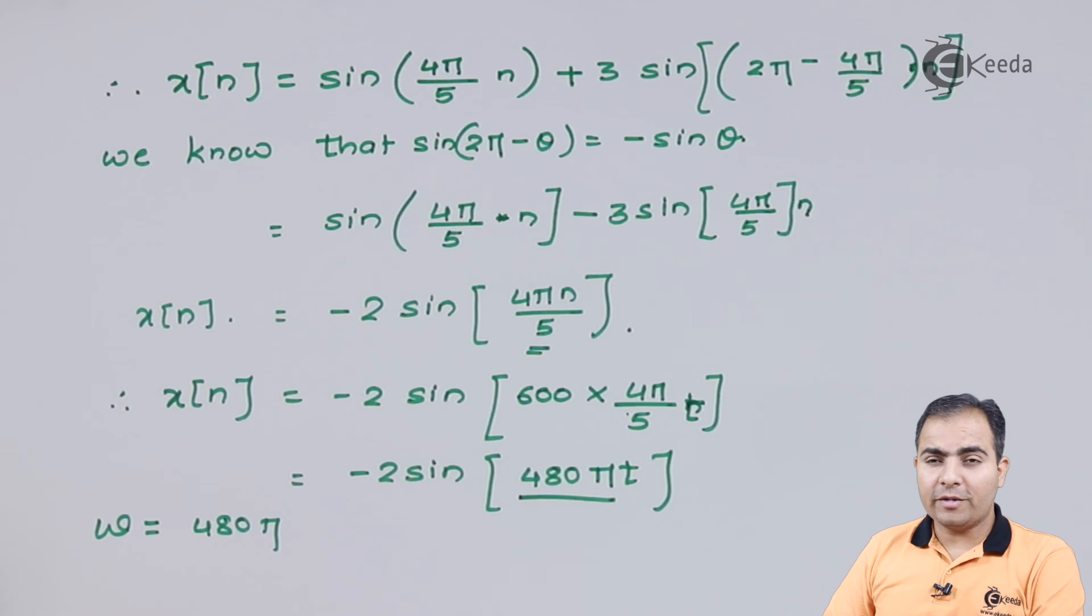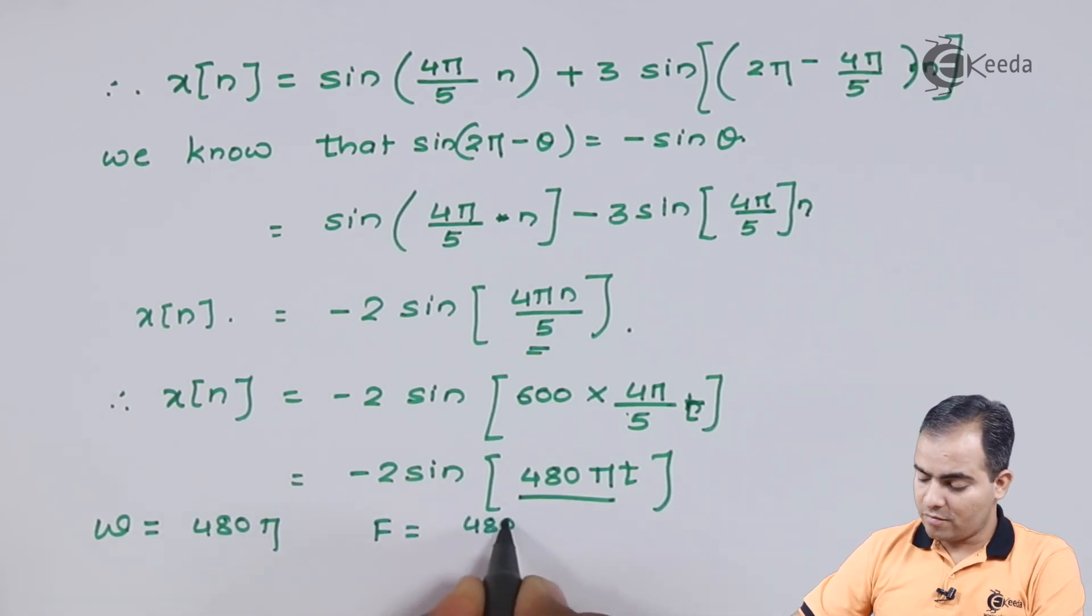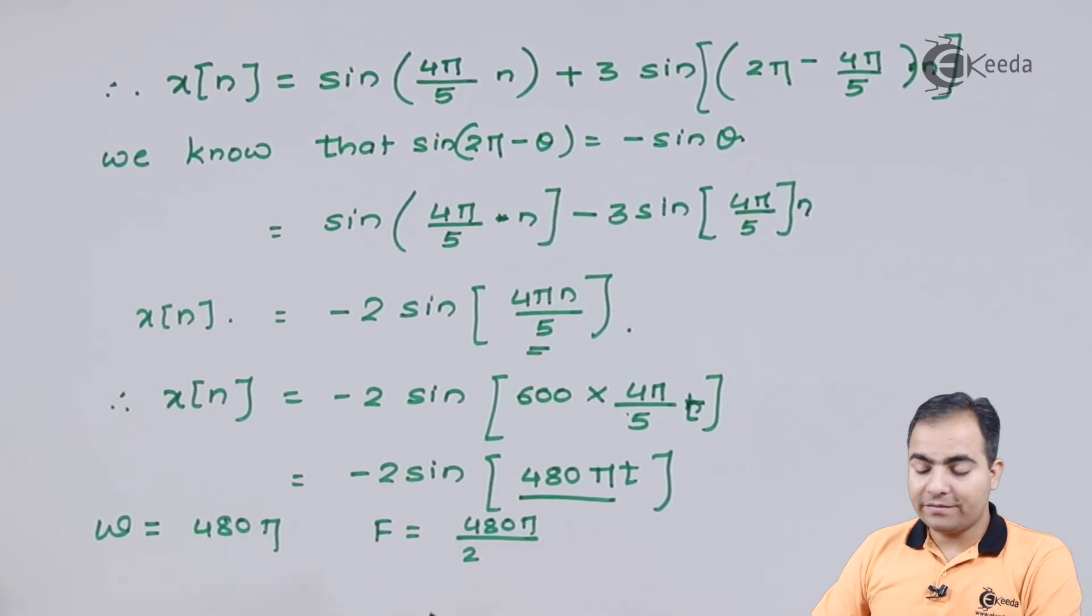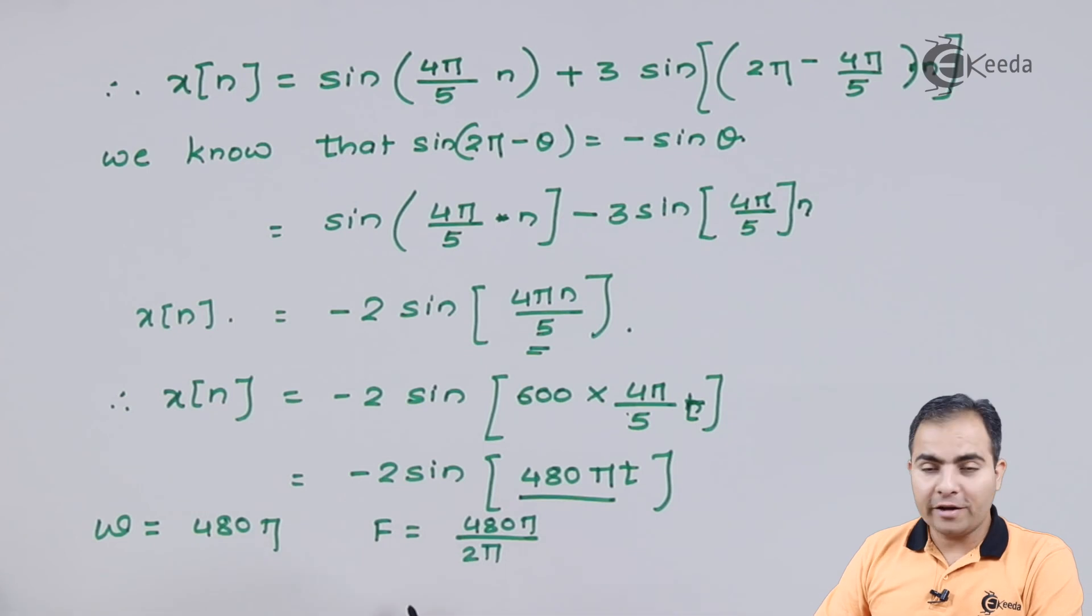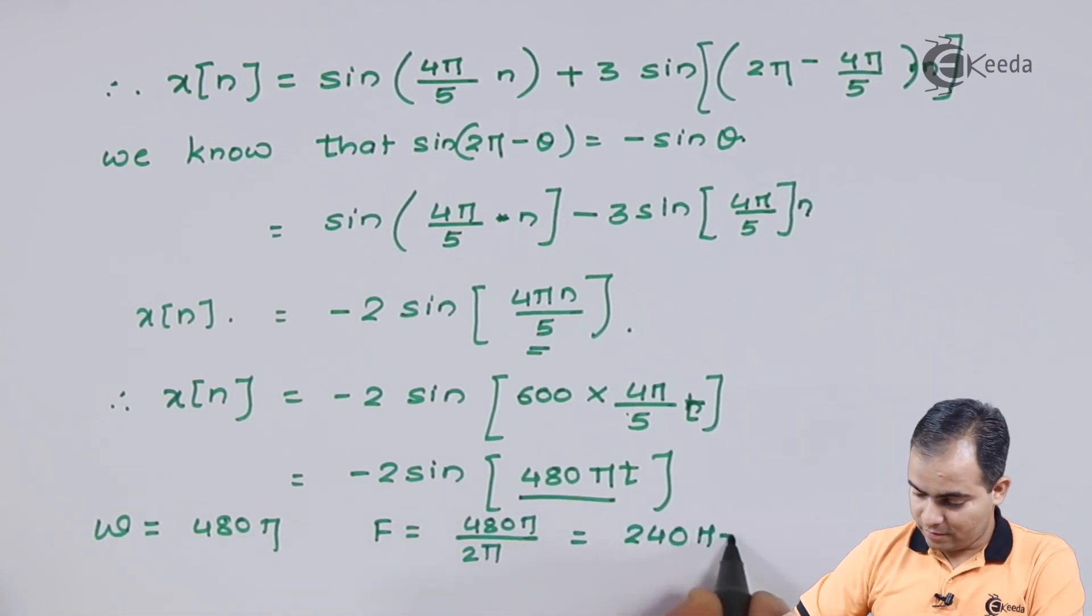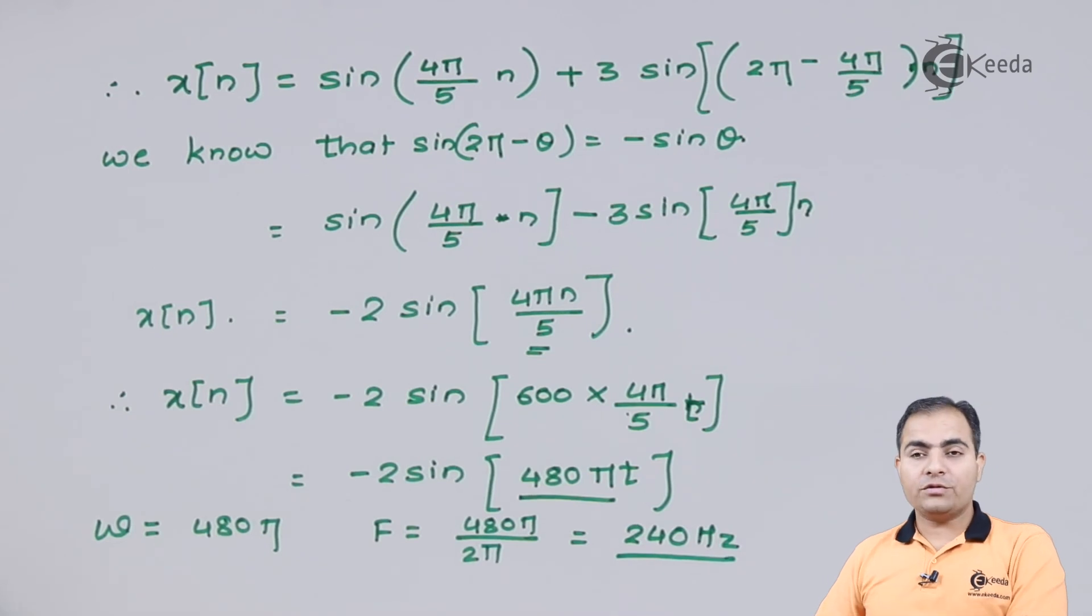What is my omega? It is nothing but 2πf, so my f is... My formula is 480π upon 2π. The 2π gets cancelled, and 480 by 2 is 240.